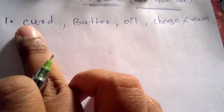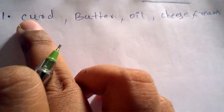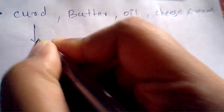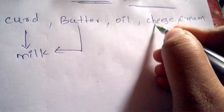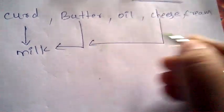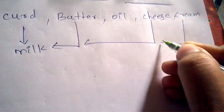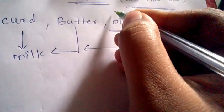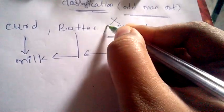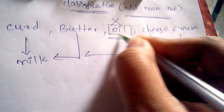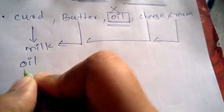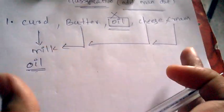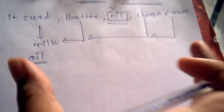Curd is made up of milk. Butter is made up of milk. Cheese is made up of milk. Cream is also made up of milk. But oil has no relation with milk — it is something different from the remaining options. So oil will be the answer because it is different from all the remaining options. This is called classification or odd man out.